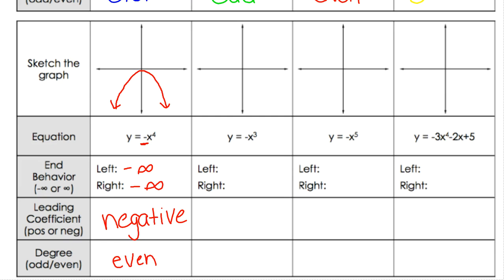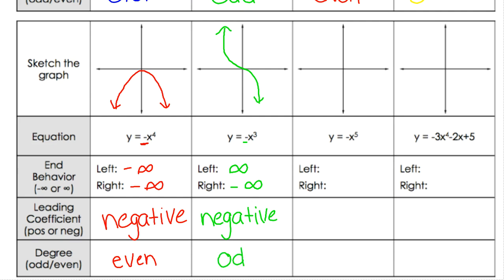Next up we have negative x³. Negative x³ starts up high and then comes downward. The left side is pointing upwards and the right side is pointing downwards towards negative infinity. We have a negative out in front, so that is a negative leading coefficient, and the degree on this one is 3, so it is odd degree.